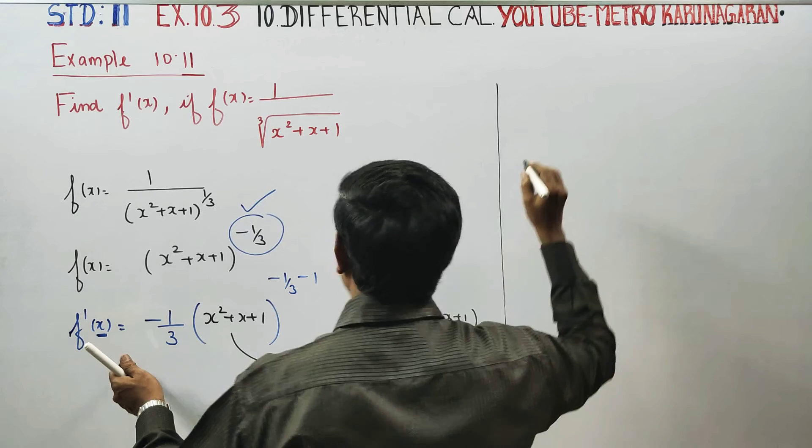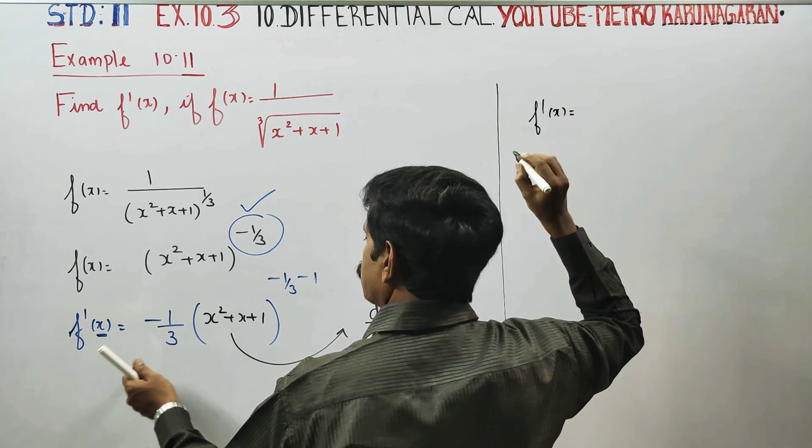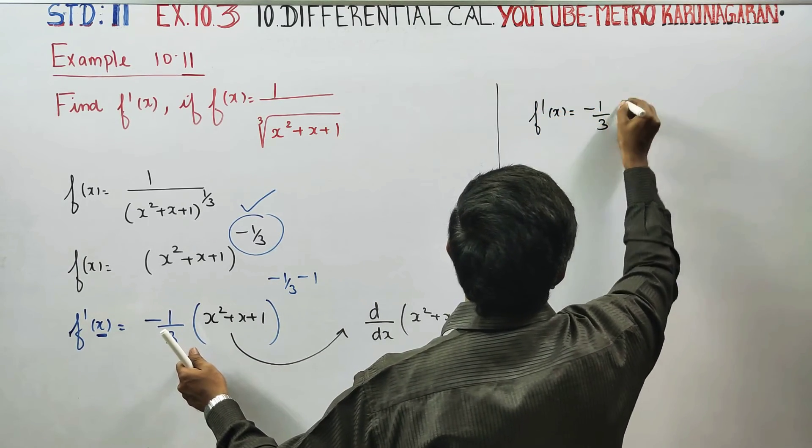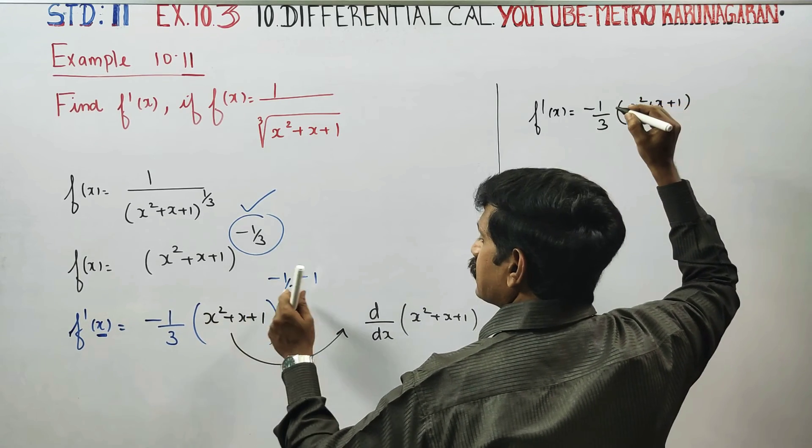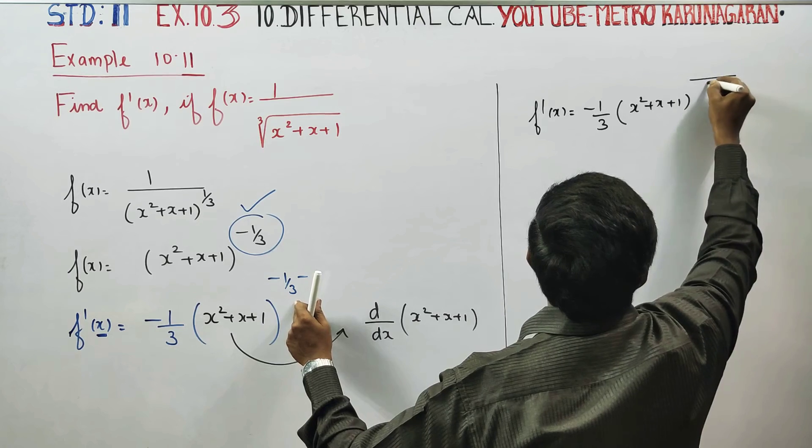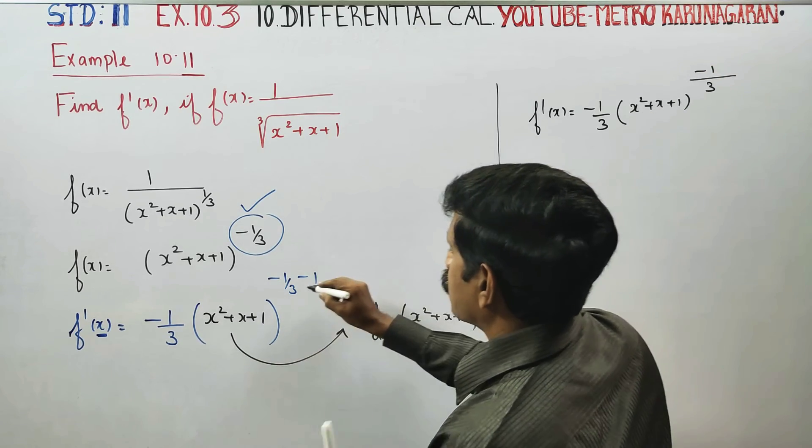f dash x is equal to minus one by three, x square plus x plus one, minus 3 minus one cross multiply.